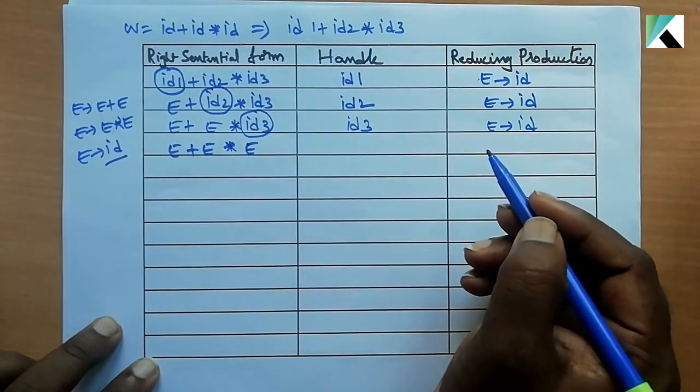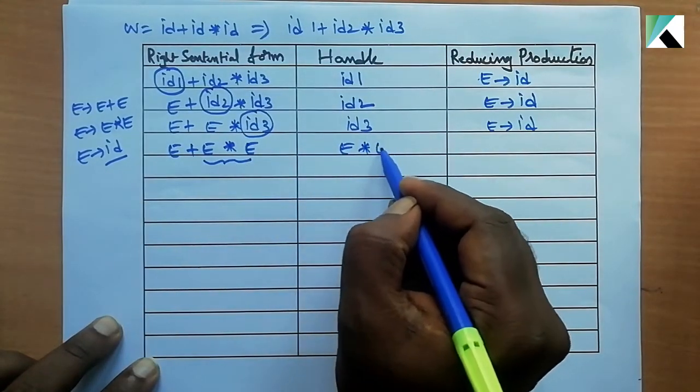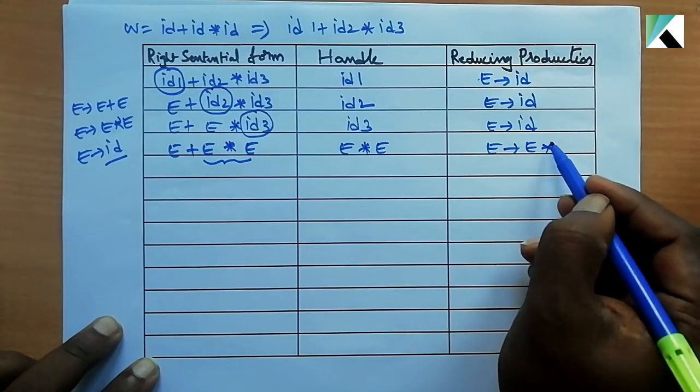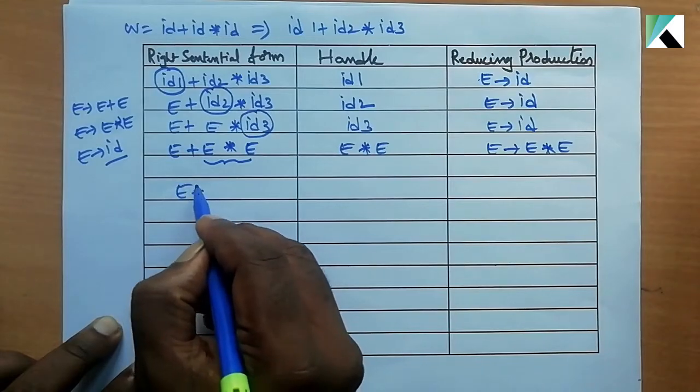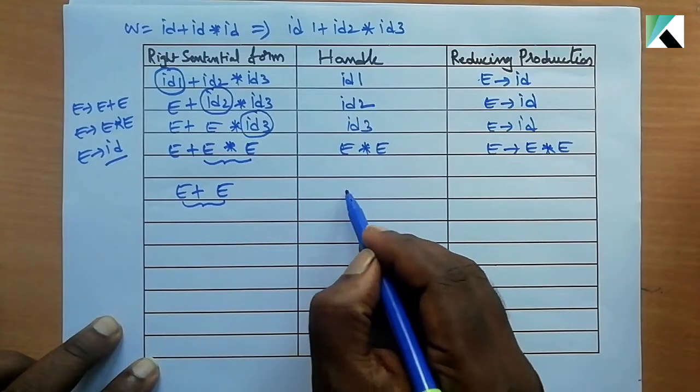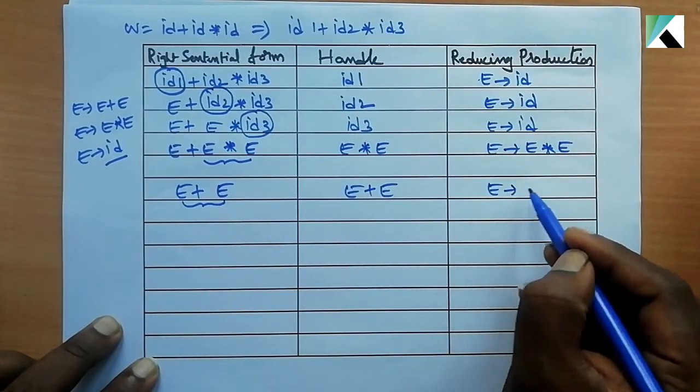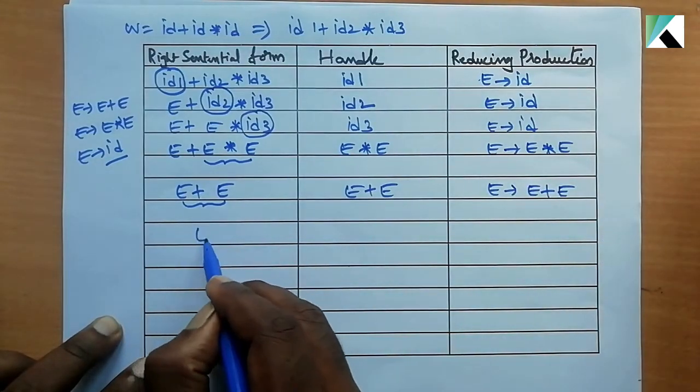Now consider this one as a handle: E star E. Reducing this gives us E plus E.